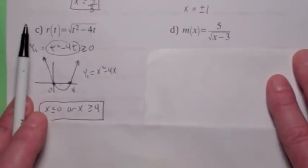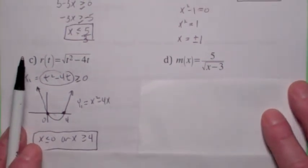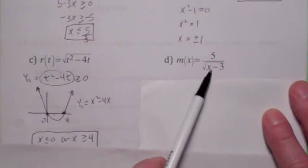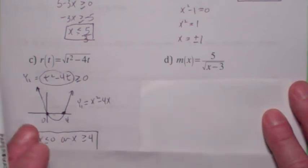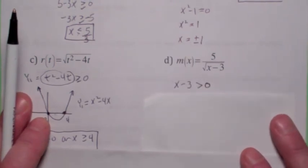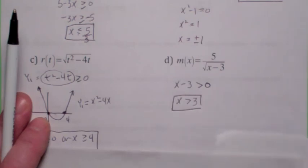Last one. This one is kind of interesting because it has both things going on at once. The bottom cannot equal 0, but also what's inside the radical must be greater than or equal to 0. If you put those two together, you get that x minus 3 must be greater than 0, which means x must be greater than 3.